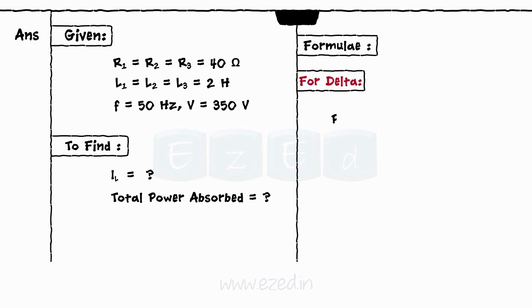For the delta system, the phase voltage equals the line voltage. The phase current equals the phase voltage upon the impedance and the line current equals root 3 into the phase current.